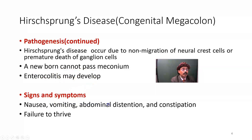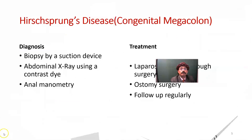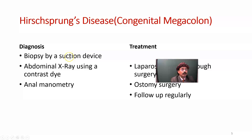Signs and symptoms include nausea, vomiting, abdominal distension, constipation, and failure to thrive. Diagnosis involves biopsy using a suction device to obtain the full wall thickness of the colon or rectum — otherwise, pathological tissue may be missed — as well as abdominal X-ray using contrast dye such as barium, and anal manometry to assess how tight the aganglionic part is.